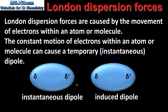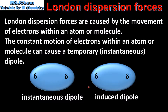If a molecule with an instantaneous dipole comes into close proximity with another molecule, it can induce a dipole in this molecule. This is known as an induced dipole. London dispersion forces are made up of both instantaneous dipoles and induced dipoles. It's important to note that all atoms and molecules have London dispersion forces, including both polar and non-polar molecules.